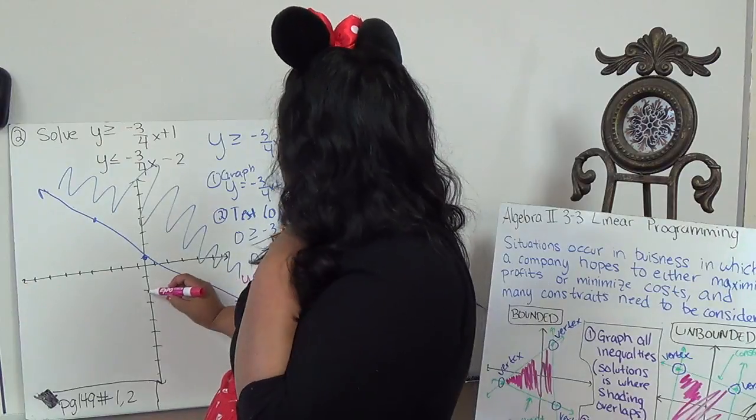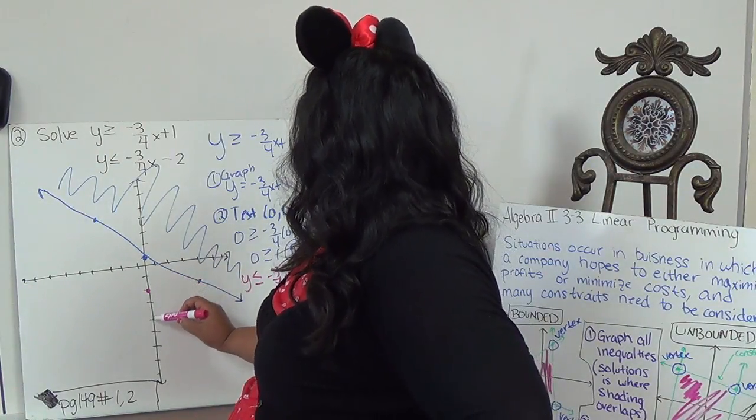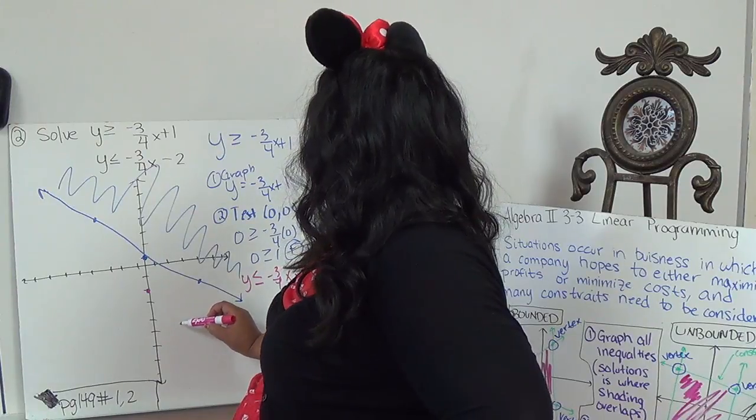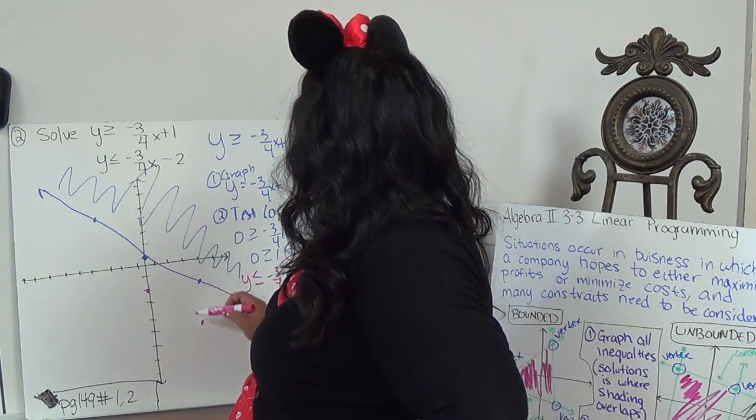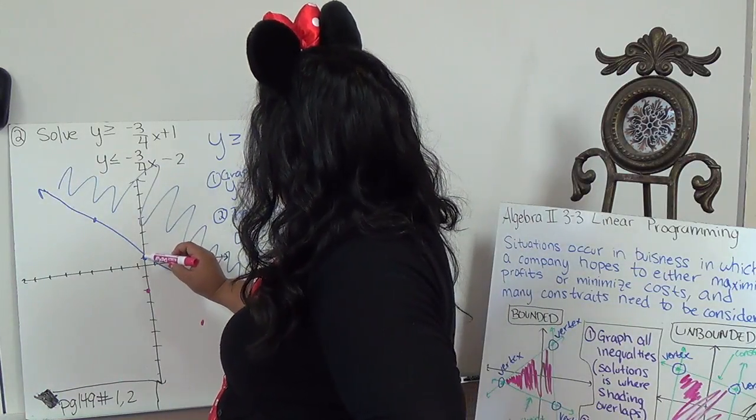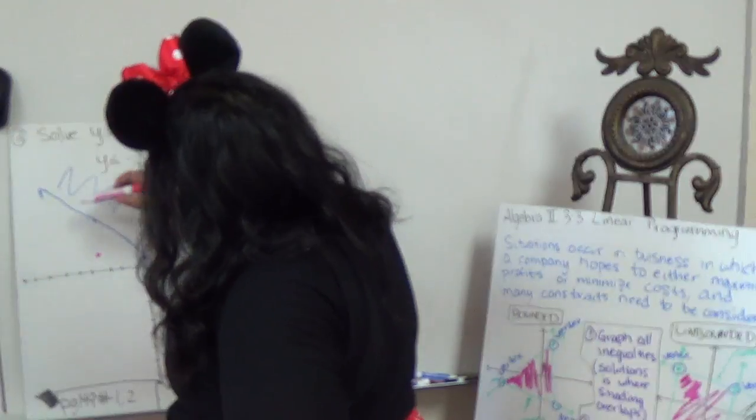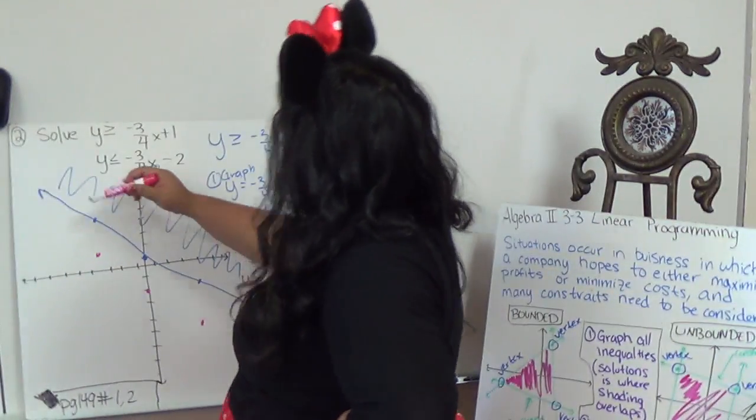So I'm going to start at negative 2. And we'll go down 3 over 4. And I'm going to do the same thing, I'm going to put the opposite, I'm going to put the negative on the bottom, so I'm going to go up 3, over that 4. And this is solid as well.